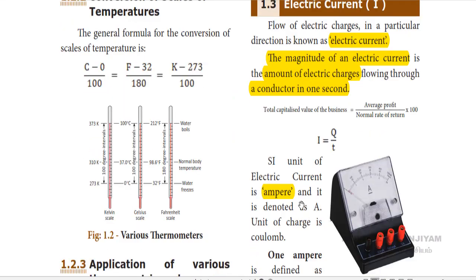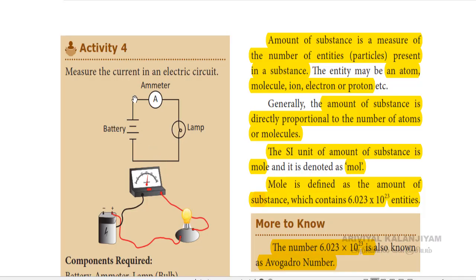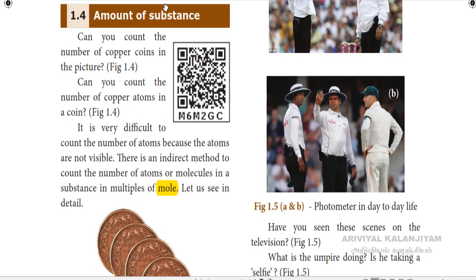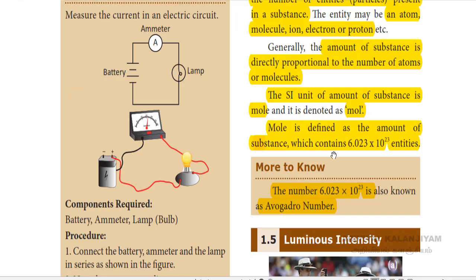In the first part, we also saw about what is ampere and coulomb, and we saw the method of measuring electric current using an ammeter. Finally, we saw about the amount of substance — that is, measuring the amount of substance using mole.